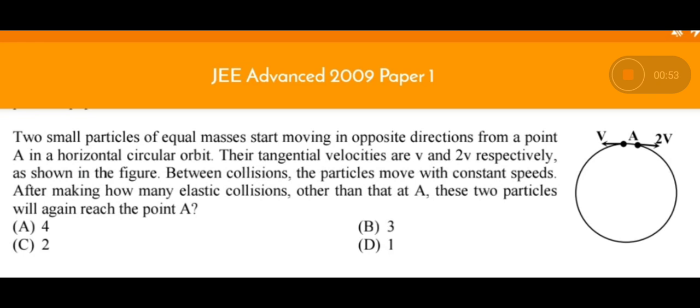So to reach point A they should have these velocities again. They are asking how many collisions are required. The options are 4, 3, 2, and 1.